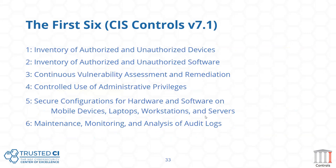The first six CIS controls that you need to focus on to get started are: inventory of devices, inventory of software, doing vulnerability assessment and remediation — patching — control and use of administrative privileges (including two-factor authentication), having a secure configuration for hardware and software, and monitoring your systems so you know what's going on — understanding the normal behaviors of people and devices so you can detect potentially abnormal behavior as a sign of an attacker.